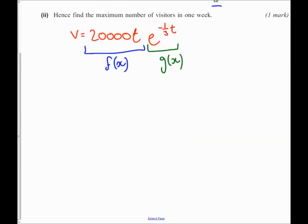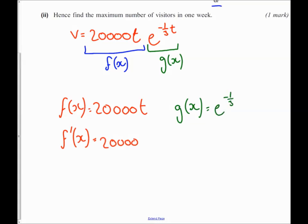So I'm going to say 20,000t is my f of x, so my derivative of that is going to be 20,000. My g of x is equal to e to the power minus a third t, so my derivative of that is going to be minus a third e to the power minus a third t using the chain rule.